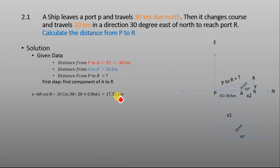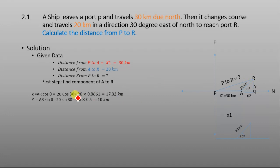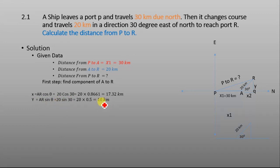The x-component is 17.32 kilometers. Now we find the y-component of vector AR using AR sine theta, where theta is 30 degrees and AR is 20 kilometers. This gives the y-component as 10 kilometers.